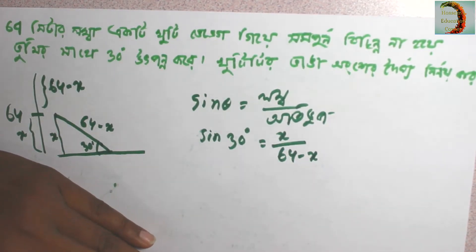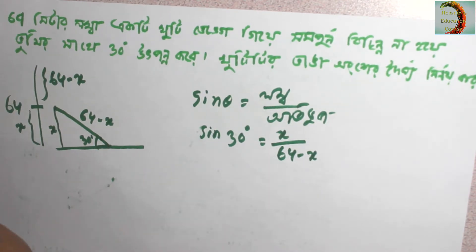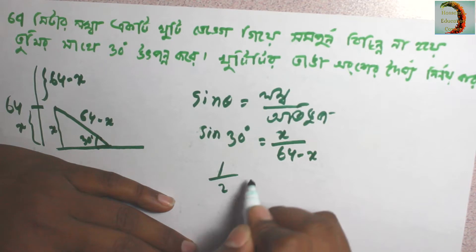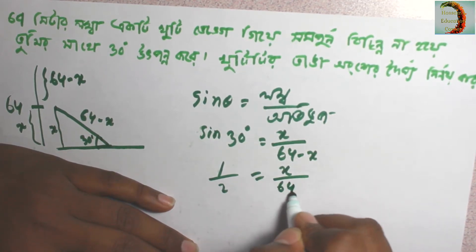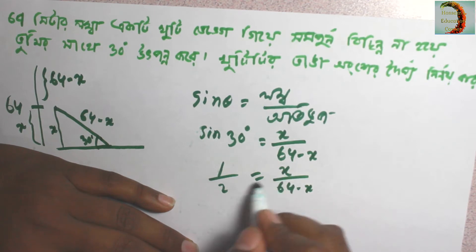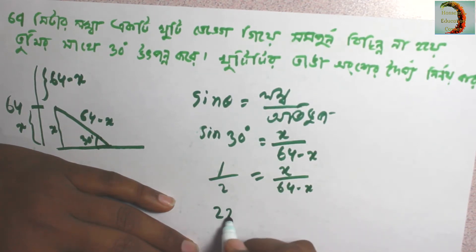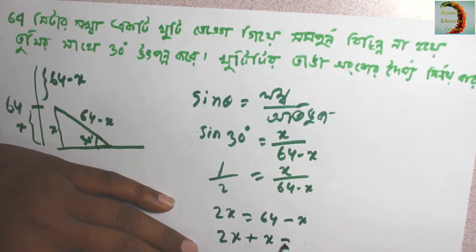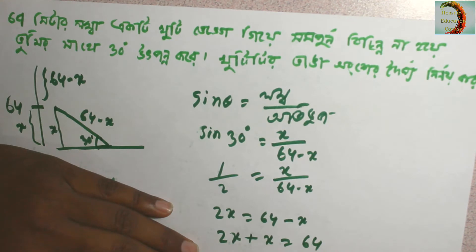Minus x. 6x minus x plus x equals 64. X equals 64 divided by 3.